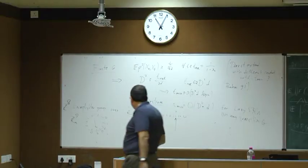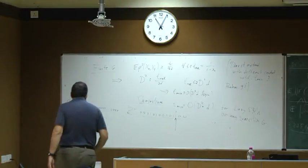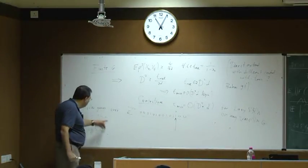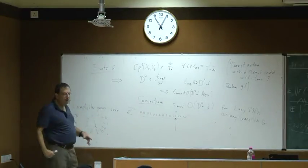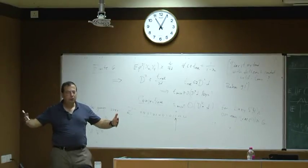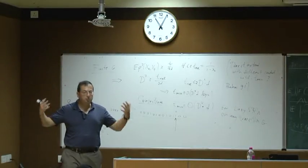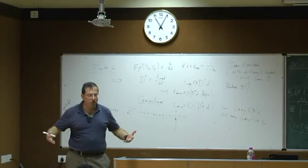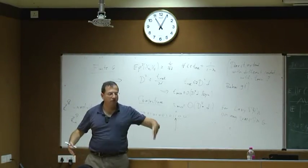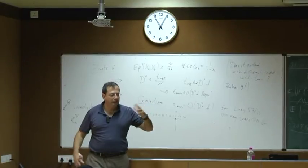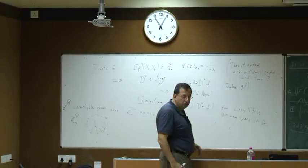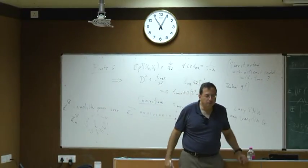If we start with a base graph of N nodes, the corresponding lamplighter graph will have N times 2^N nodes, because we have all configurations of lamps and all locations of markers.